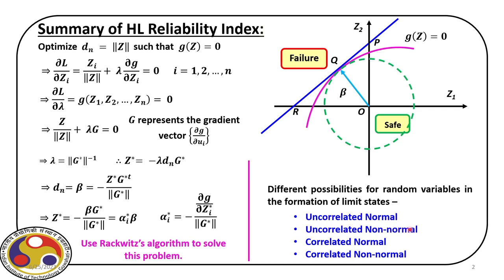There are two more possibilities. The first is the correlated normal case, where we have a set of normal random variables that are correlated. The most general case is the correlated non-normal case — a set of non-normal random variables which are correlated. These two cases we are going to discuss today.